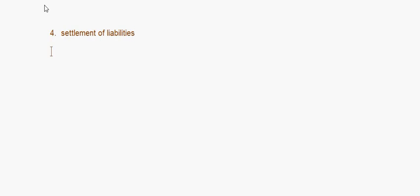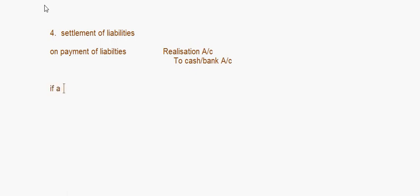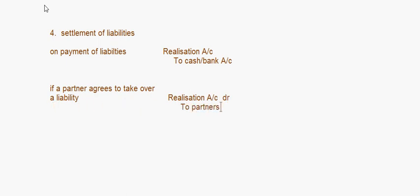The fourth entry is settlement of liabilities — again for both recorded and unrecorded liabilities. When liabilities are paid in cash, the entry is: Realization Account debit, to Cash or Bank Account. If a partner agrees to take over a liability, the entry is to the Partner's Capital Account instead of cash or bank.